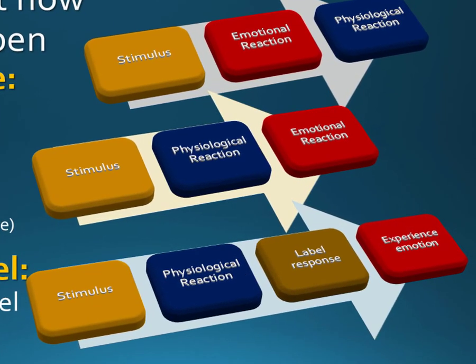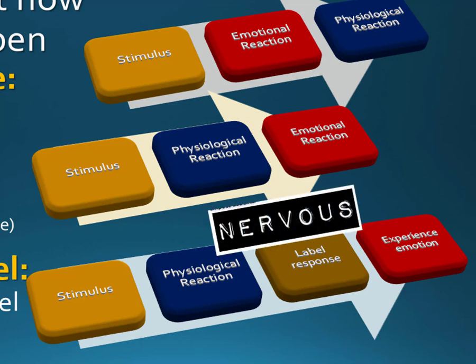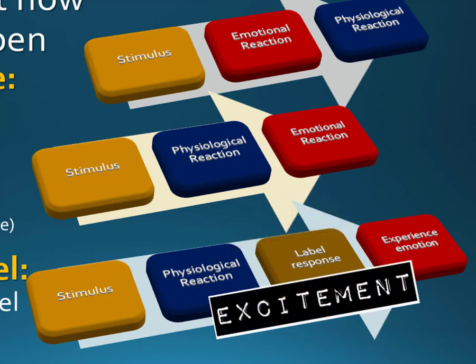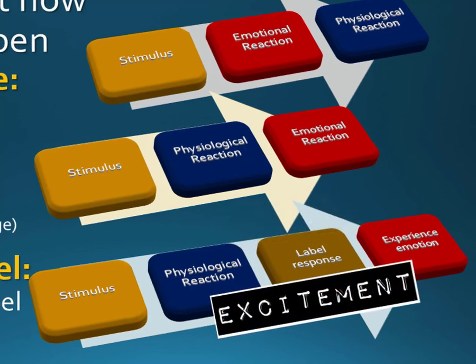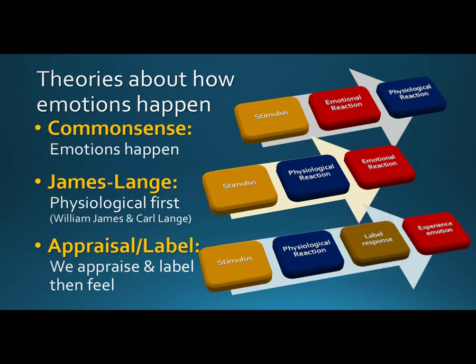The stimulus still causes the physiological reaction, but then your brain gets involved as you label your response. The label you use determines the emotions you experience. Depending on how you label the physiological response, you will experience different emotions. If you label your heart pounding and blushing as nervous, you will feel nervous. If, however, your label is excitement, then you feel excitement. This last approach allows us to have more control over our emotions because what we think is instrumental in what we feel. If we change our thoughts, we can manage our emotions.